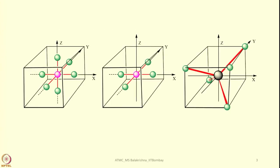Now it would be interesting and informative to consider 3 geometries: the octahedral field, square planar, as well as the tetrahedral field. For convenient understanding, let us confine an octahedral molecule, a square planar molecule, and a tetrahedral molecule inside a cube, with the center occupied by the metal ion and surrounding 6 ligands in the case of octahedral and 4 ligands in the case of both square planar and tetrahedral geometries. These green spheres represent ligands and their approach towards the central metal atom to establish the metal-ligand bond.